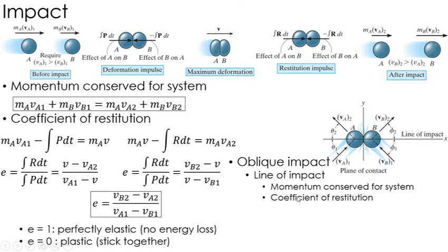Momentum is conserved for the whole system. And then the coefficient of restitution is applied along that line of impact. So this would be like cosine of theta and cosine of phi, shown here.